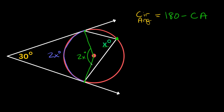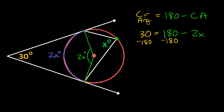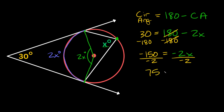Now that we have the central angle as 2x, let's plug it into our formula. We're given the circumscribed angle as 30 degrees, so: 30 equals 180 minus 2x. Subtracting 180 from both sides gives us negative 150 equals negative 2x. Dividing both sides by negative 2, we get x equals 75 degrees. So this missing inscribed angle is equal to 75 degrees.